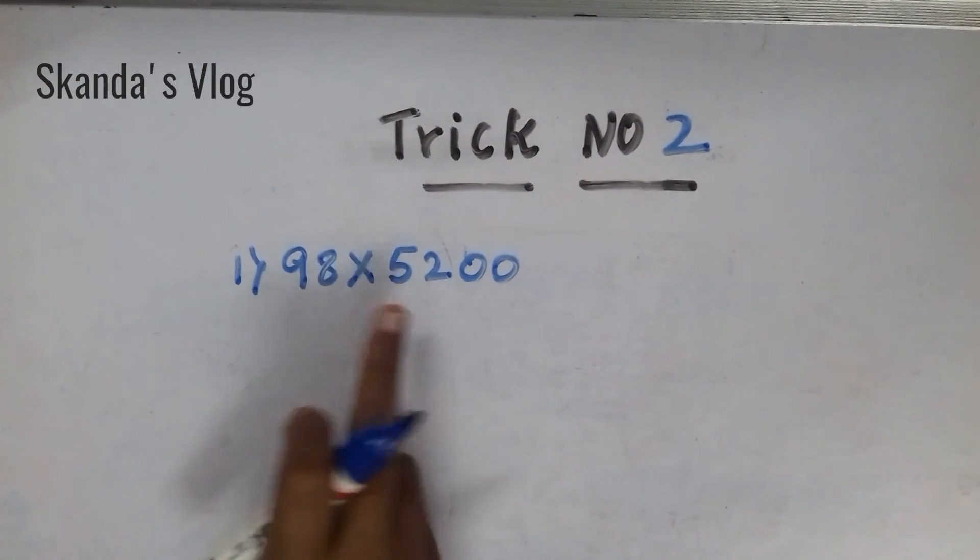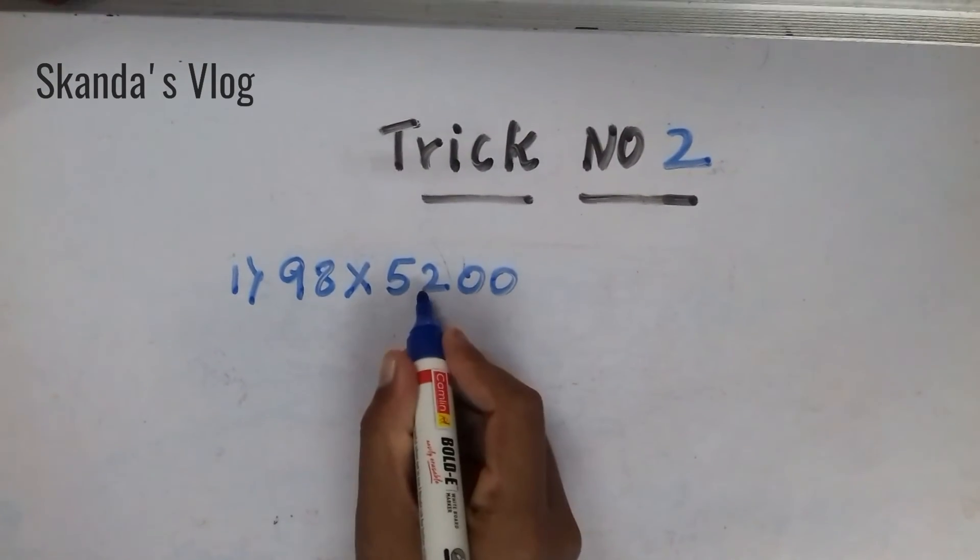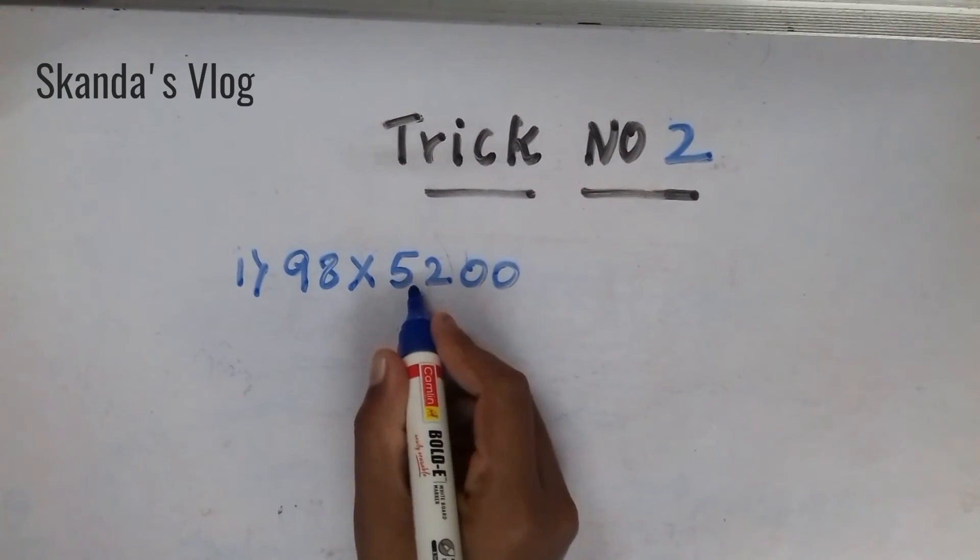Now, this is 98 into 52. For 100 digit, I added 2 zeros again. And put this, no, 52 double.